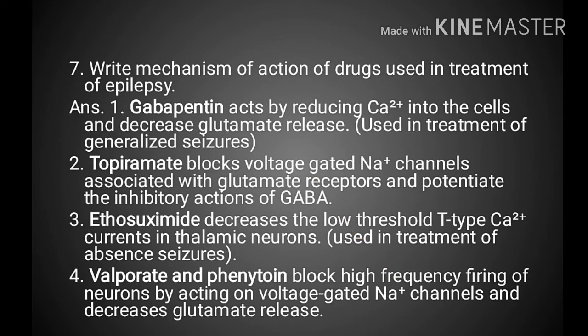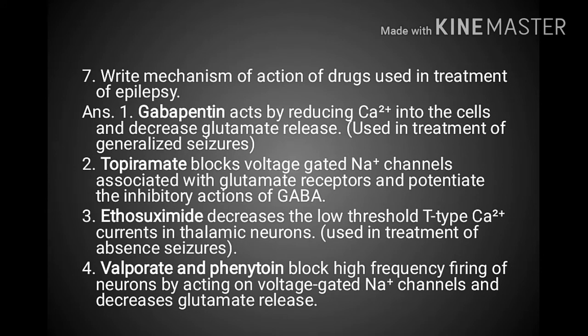Gabapentin acts by reducing calcium entry into cells and decreasing glutamate release. Topiramate blocks voltage-gated sodium channels, is associated with glutamate receptor modulation, and potentiates the inhibitory action of GABA. Ethosuximide decreases the low threshold T-type calcium currents in thalamic neurons. Valproate and phenytoin block high-frequency firing of neurons by acting on voltage-gated sodium channels and decreasing glutamate release.